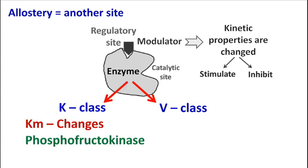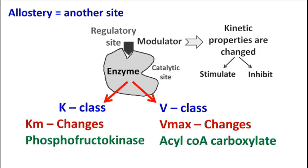Whereas V-class allosteric enzymes are the ones where modulator alters Vmax value and Km value remains constant.